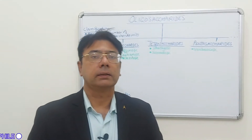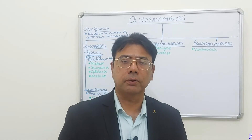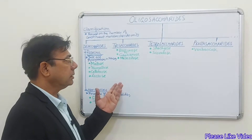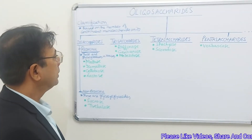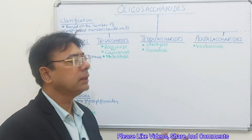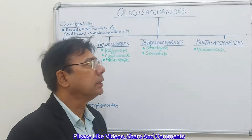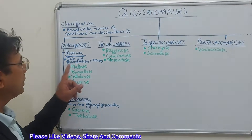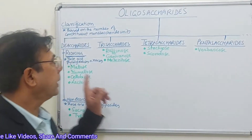On hydrolysis, oligosaccharides yield monosaccharides. Their classification is based on the number of monosaccharide units linked together: disaccharides have two monosaccharide units, trisaccharides have three, tetrasaccharides have four, pentasaccharides have five, and so on up to ten monosaccharide units. Of these, disaccharides are the most common.